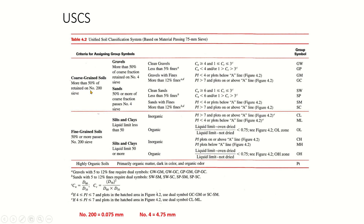You have to know the sieve size for number 200 and the sieve size for number 4, because this is very important. For sieve number 200, the size is 0.075 millimeter, and for sieve number 4, it equals 4.75 millimeter. Memorize these because the USCS system table uses sieve number 200 and number 4.